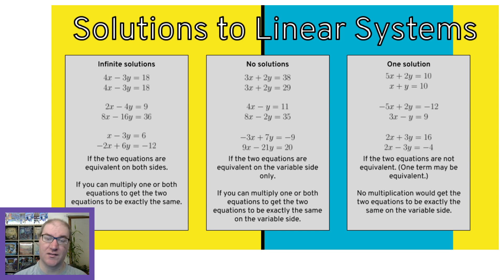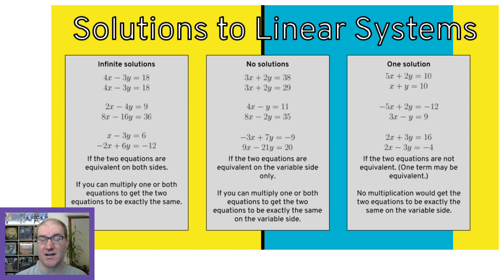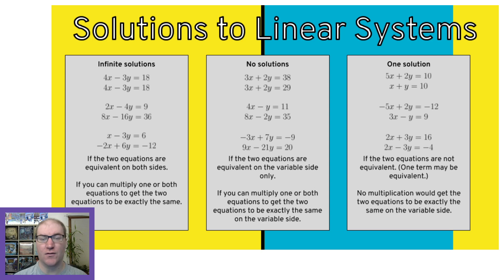The second example in the infinite solutions box says 2x minus 4y equals 9 and 8x minus 16y equals 36. That bottom equation is just four times the top equation. If I multiply everything in the top equation by 4 I get 8x minus 16y equals 36. That's an example of two equations that are equivalent, just not at first glance. So if you can find a number that when multiplied makes them exactly the same, that's a system with infinite solutions.